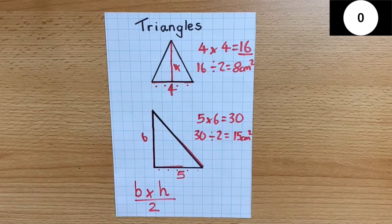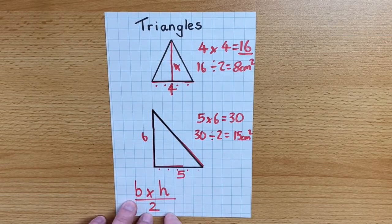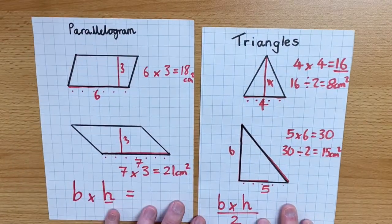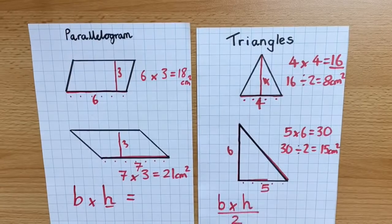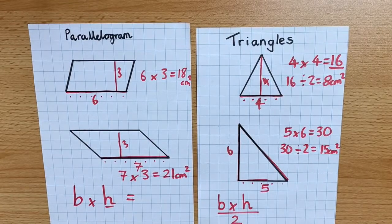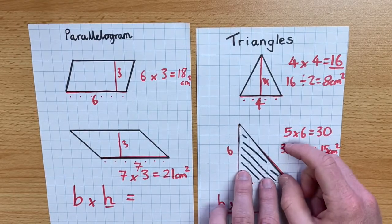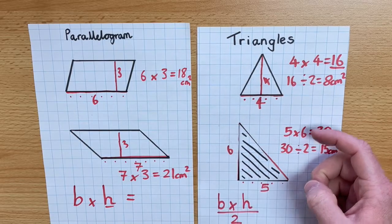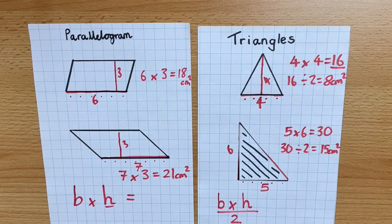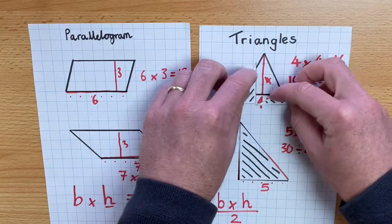Now, you may say to me, why do we need to divide by 2, but with a parallelogram, we don't divide by 2. Well, the reason why we divide by 2 is because two triangles make a square or a rectangle. And I can prove this to you by showing you this.